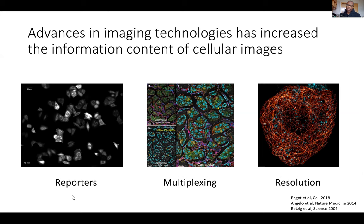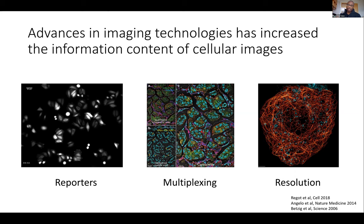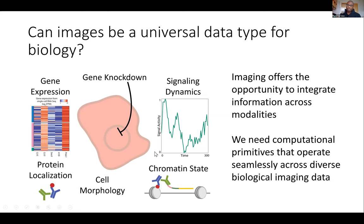Given the fact that we can measure many more things with imaging, and also given that the algorithms are letting us extract information from images with an accuracy that was previously impossible, I think there's a potential for images to just be a universal data type for biology. This potential follows from those two technology trends — that we can measure more and that we can make this information accessible and interpretable with the algorithms.